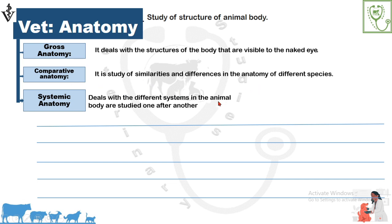Systemic anatomy is the study of the anatomy of the different systems of an animal body separately. For example, if we have selected the skeletal system for study, then we have to complete it first before going to the next system. So based on the different systems of an animal body, systemic anatomy is divided into several sub-branches.